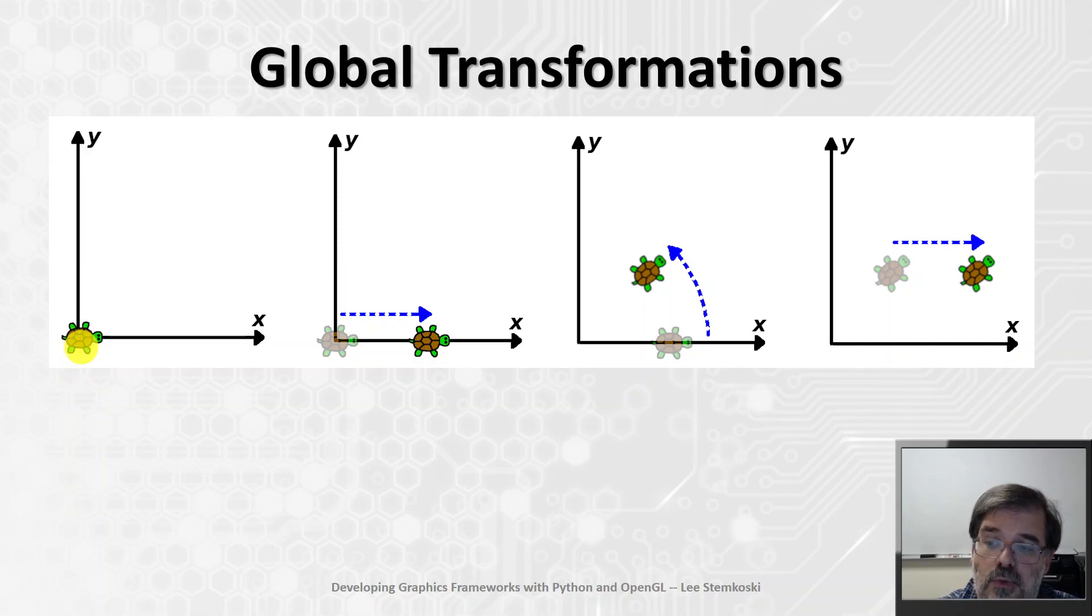If you want to translate this object, let's say in two-dimensional space, you would write down the translation matrix, and then you would multiply each of these points by the translation matrix, and that would produce this new image here.